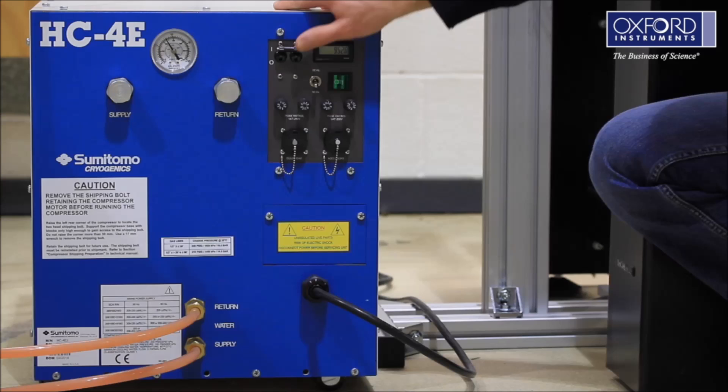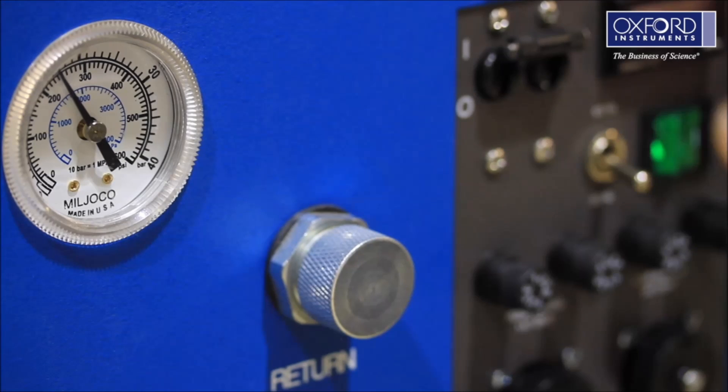Turn on the compressor before you fit the helium lines. Carry out the SHI procedure to check the operation of the compressor. Once this test is complete, unpack the helium lines and fit the labels to them.